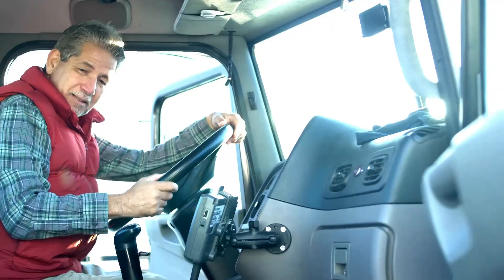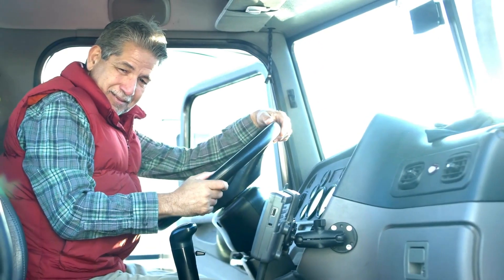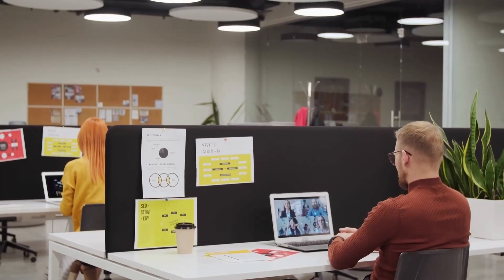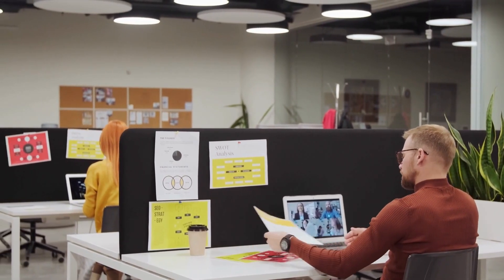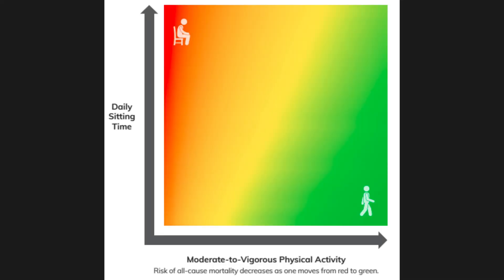There are a couple of really neat takeaways from this graph. If you are somebody who spends a lot of time sitting — maybe you are a trucker who has to drive many hours a day with no option to stand up and move around, or you work in a cubicle spending eight, nine, ten hours sitting every day — you might look at this graph and think you're going to have to do a lot of moderate to vigorous activity to overcome that sedentary behavior. But there is hope, because you are able to do a certain amount of moderate to vigorous activity that can offset the risk you are getting from sitting.